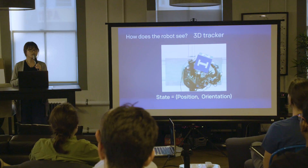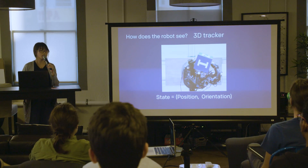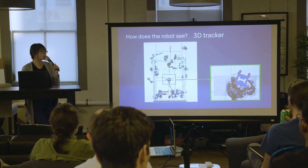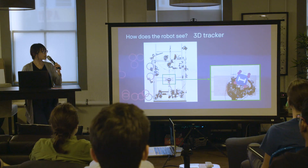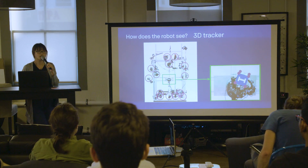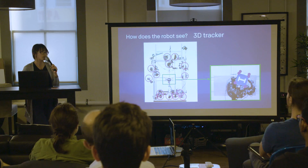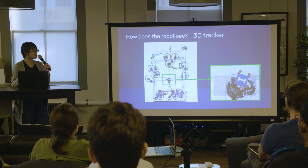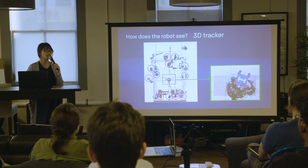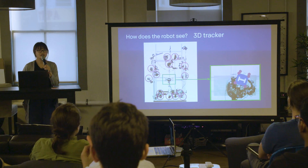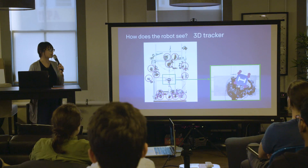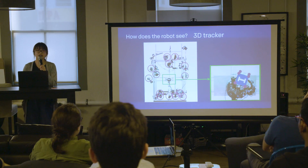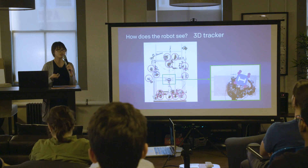To estimate state, you can use a 3D tracker. You attach markers on the object, then place the robot in a large cage surrounded by 3D sensors that read signals from those markers to determine their 3D location. However, this method is expensive, restricts the robot to the cage, and requires someone to label markers for every new object — which is impractical.